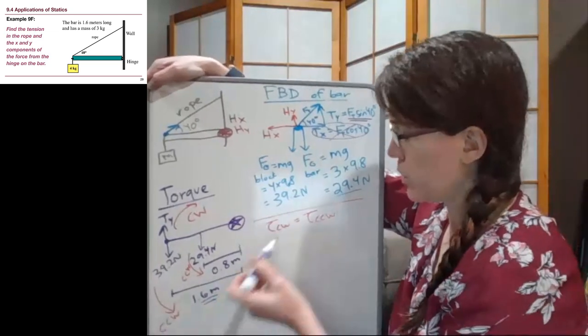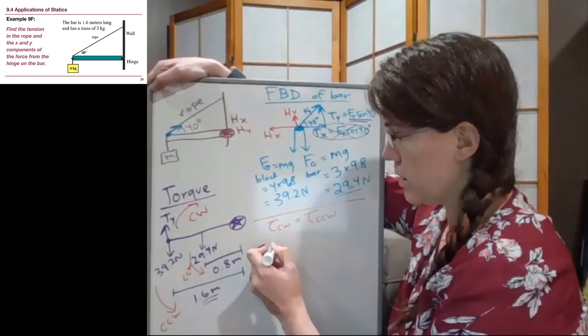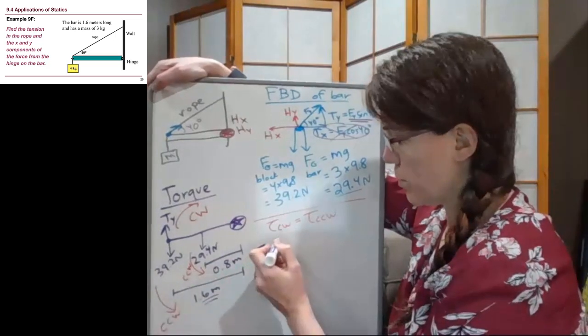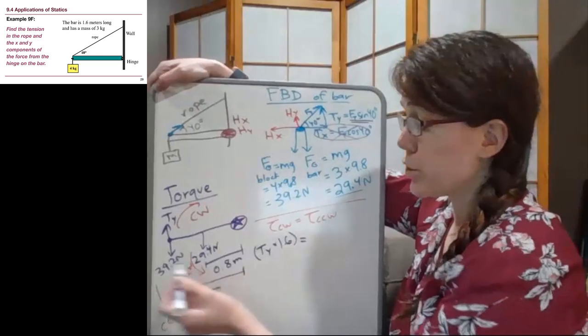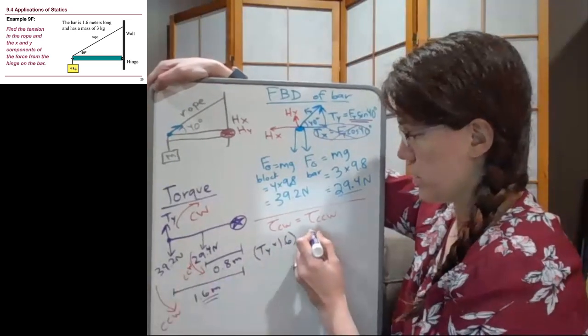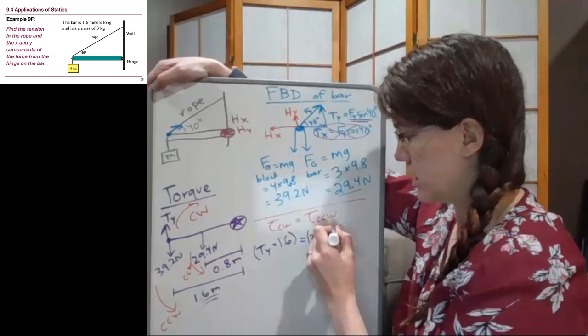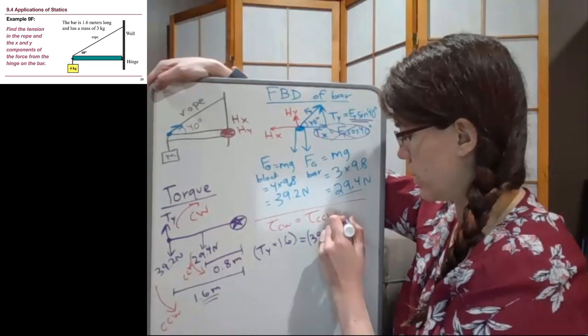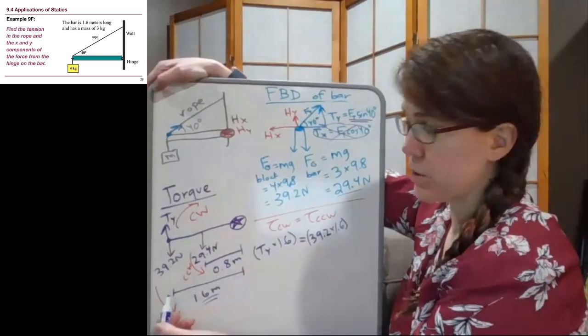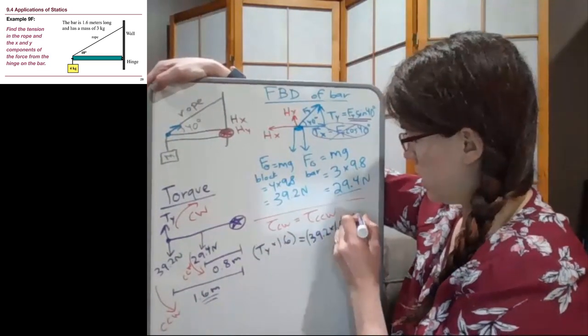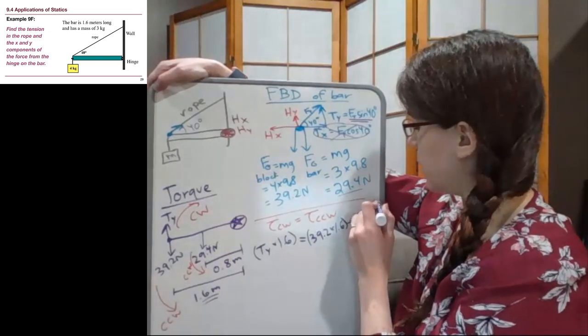So we have torques clockwise equal torques counterclockwise. And in this particular situation we have a single clockwise torque. So, ty times the distance is 1.6 meters, and there are two counterclockwise torques. So we can just put them both in either order. Those terms are going to be added together, so either order works. 39.2 Newtons is a full 1.6 meters away. The 29.4 Newtons is only 0.8 meters away.